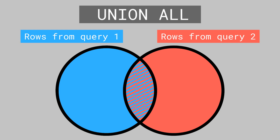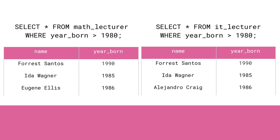Let's start with union all. When we use union all with two queries we will get the results of both queries together in a single result set. If there are rows common to both queries we'll get them twice. Let's write two separate queries: one for getting all maths lecturers born after 1980, and the other one for getting all IT lecturers born after 1980. You can see both of these queries on the screen now. When we run them we will get the results separately for both tables. Nothing new so far.